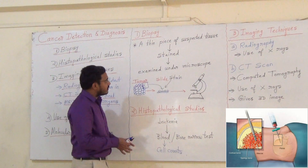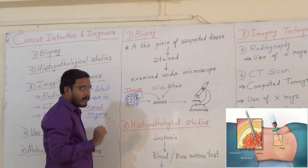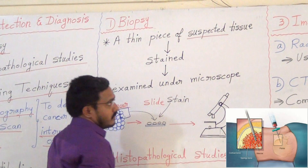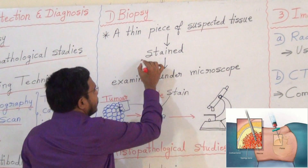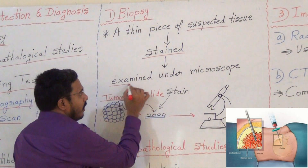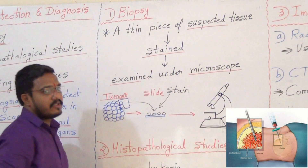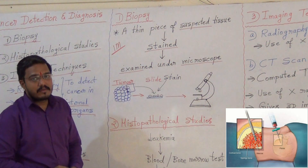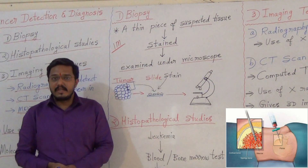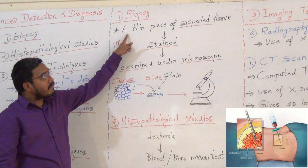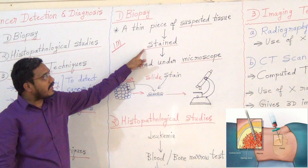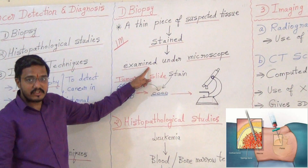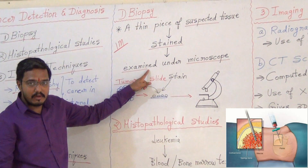In this way, in the olden days, cancer was detected. So, what is biopsy? A thin piece of suspected tissue — suspected means doubtful — is stained and examined under the microscope. This is biopsy. Biopsy: a thin piece of suspected tissue is stained and examined under microscope.